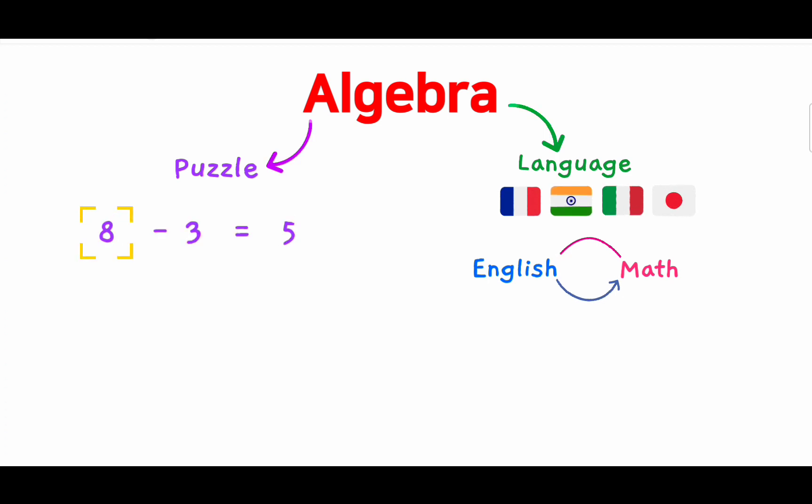Well, in algebra we don't use blank boxes. We use a letter, usually an x, y, or z, but any letter is fine. So we write x minus 3 equals 5. It is really that simple.